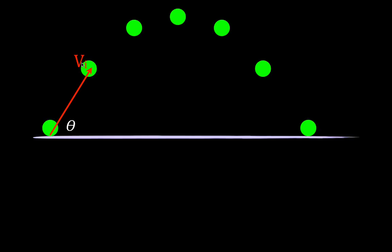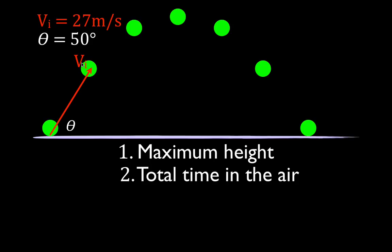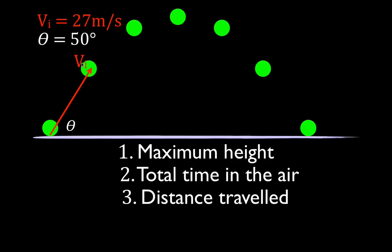The initial velocity of the object is 27 meters per second, and the angle projected above the horizon is 50 degrees. We're going to do three things: figure out the maximum height, how high the object goes; figure out the total time the object is in the air; and then figure out how far the object goes in the x direction — hopefully in 10 minutes or less.